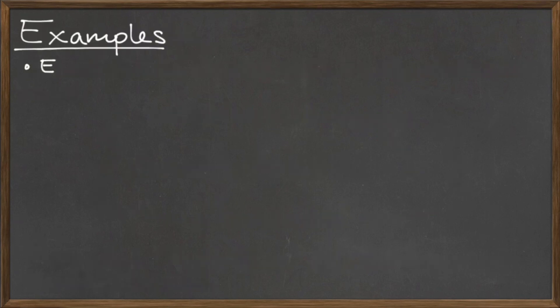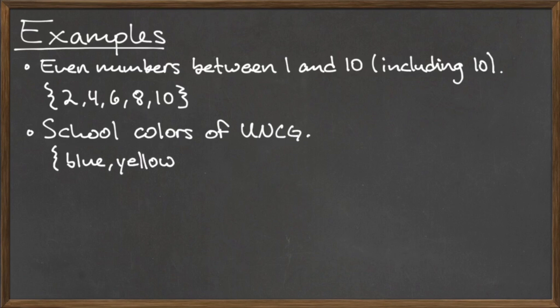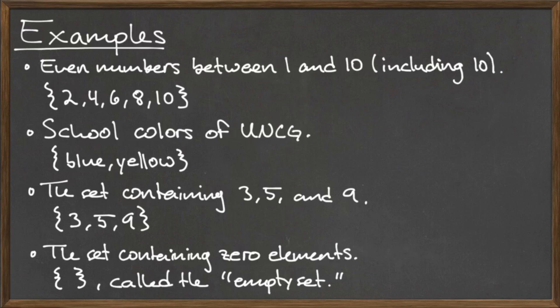Here are a few examples of sets with a small number of elements, so we can write each one out individually using roster form. The last set in this list is a special set, which we call the empty set, as it contains zero elements. We denote the empty set by two curly braces with nothing between them.